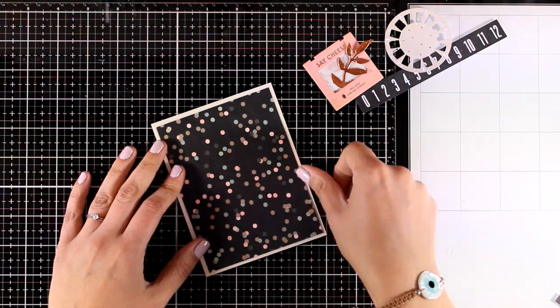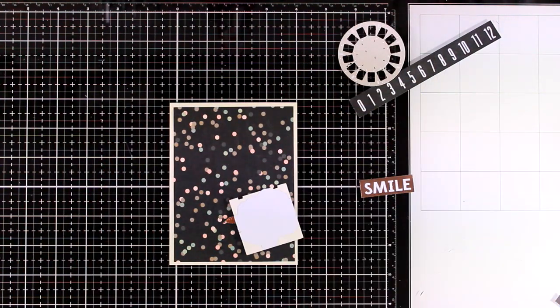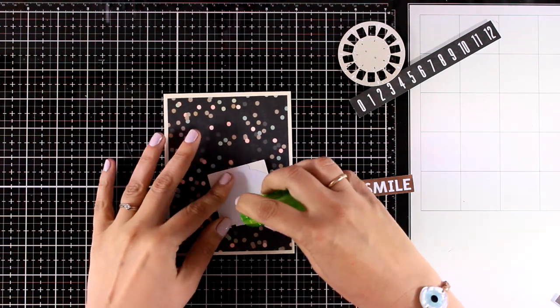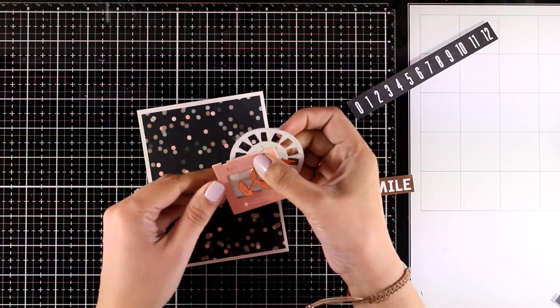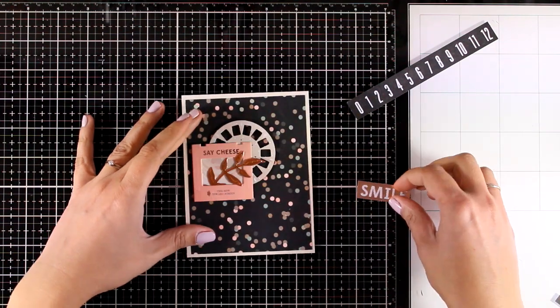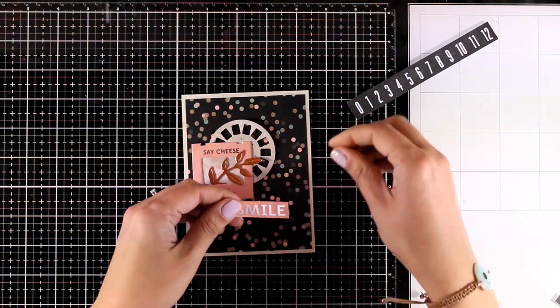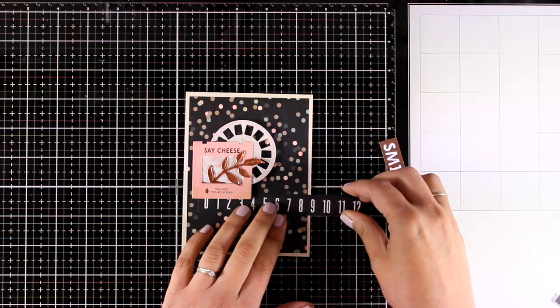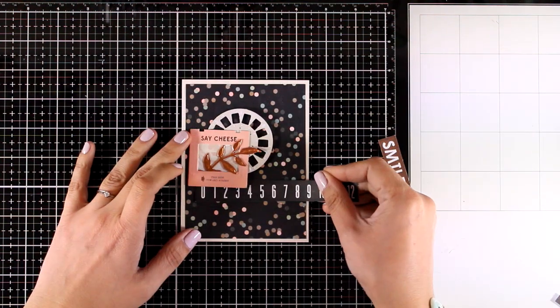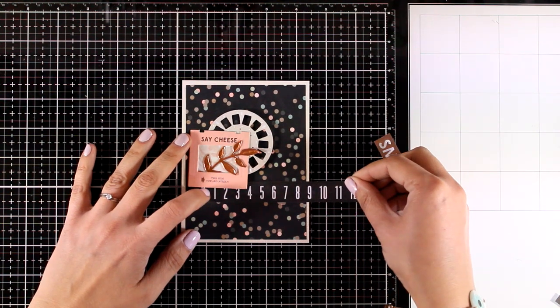So now I'm adding some tape adhesive at the back of this background paper. And I'm going to stick it on top of a 4.25 by 5.5 cream cardstock. This was included in the kit as well. So I have on my table some of the die-cuts from the kit. And just playing around with them, trying to decide how this is going to be visually pleasing. And I'm going to stick everything down once I'm happy with the placement.